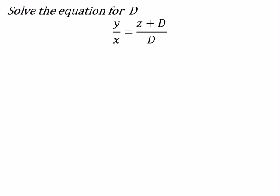So on this one, personally what I would do is I would split that fraction up on the right into two separate fractions. What I mean by that is I would still have Y over X, but this would equal Z over D and then I would plus D over D.